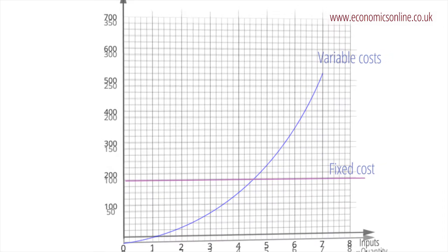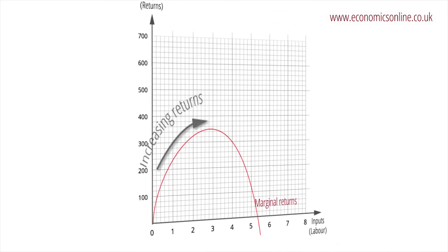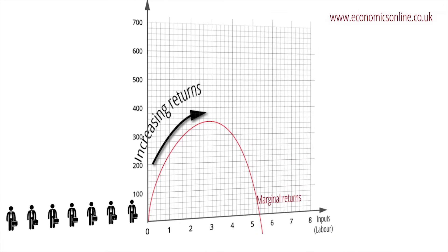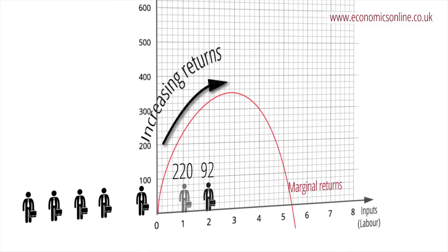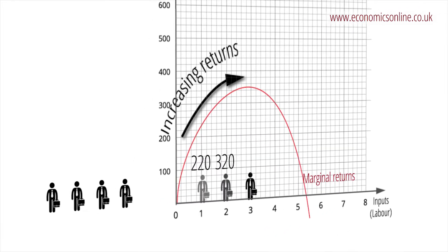This means that if we hold the fixed factors constant and progressively add more variable factors, initially the marginal output, or product, increases because variable factors, including labour, can be put to more specialist uses.